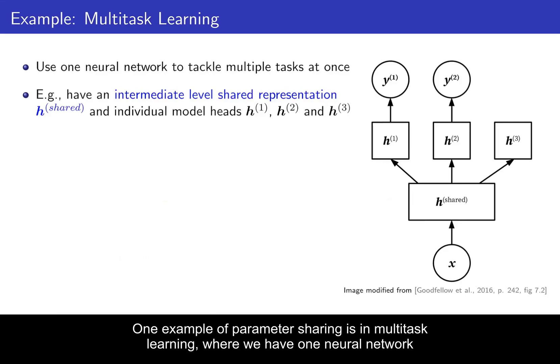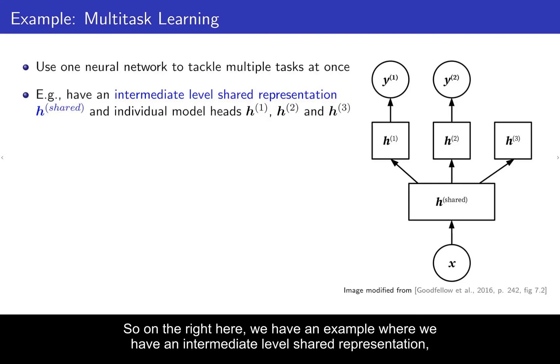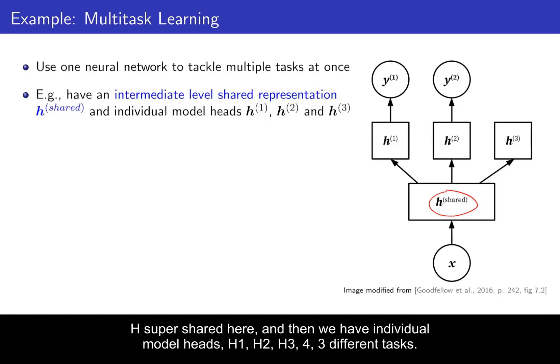One example of parameter sharing is in multi-task learning, where we have one neural network that actually tackles multiple different tasks at once. So on the right here, we have an example where we have an intermediate level shared representation, H super shared here. And then we have individual model heads, H1, H2, H3, for three different tasks.